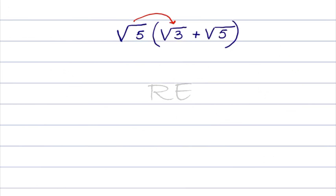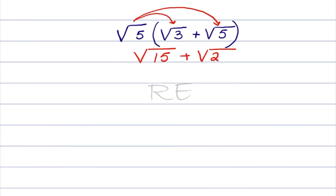Using distribution, we distribute square root of 5 over square root of 3. We get square root of 5 times 3, which is square root of 15. We then distribute square root of 5 over square root of 5. It becomes square root of 5 times 5, which is square root of 25.